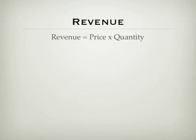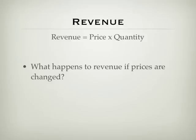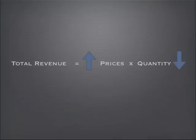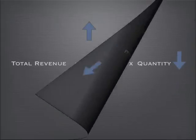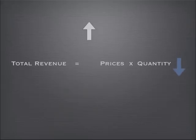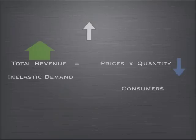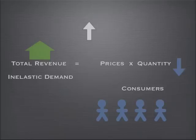Revenue is equal to price times quantity. What happens to revenue if prices are changed? When prices go up, quantity goes down — we know this from the law of demand. If prices go up and quantity goes down just a little bit, then we say that total revenue will rise. This is called inelastic demand.